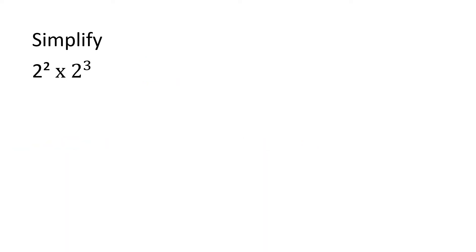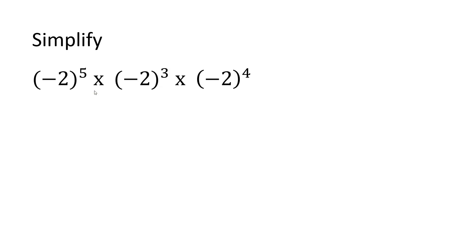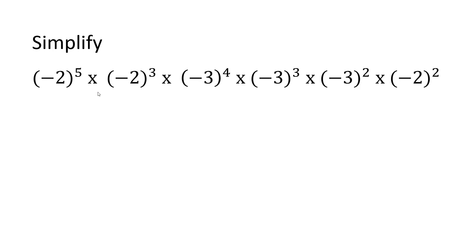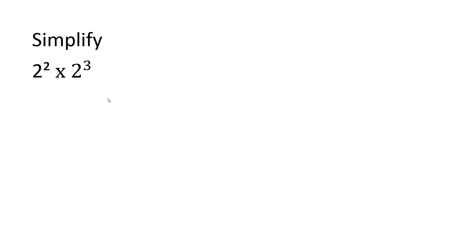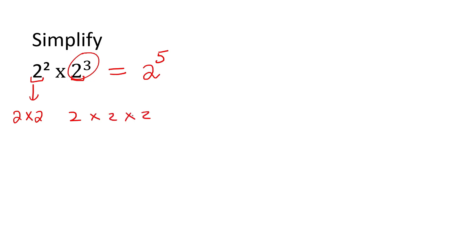Let's also do examples where it gets a little bit more challenging. Have a look here — the bases are the same. When the bases are the same, leave the base — don't make it a 4, that's the part where people always make mistakes — and then just say 2 plus 3, which is 5. So we get 2 to the power of 5. For those still comfortable writing it out: 2 to the power of 2 is 2 two times, and this is the number 2 three times — if you count all the 2s, we now have 5.